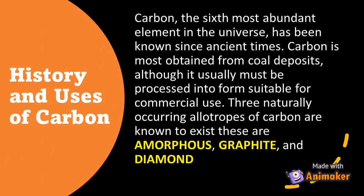Carbon, the sixth most abundant element in the universe, has been known since ancient times. Carbon is most commonly obtained from coal deposits, although it usually must be processed into a form suitable for commercial use. Three naturally occurring allotropes of carbon are known to exist: amorphous carbon, graphite, and diamond.